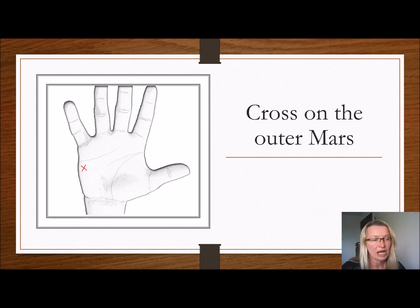Cross on the outer Mars, because this is that area when a person is very resilient. It shows resilience. So that should be quite free of any marks on that area. And if there's a cross there, it is supposed to represent somebody who's quarrelsome and obstinate. So they're not being very easy to get along with.